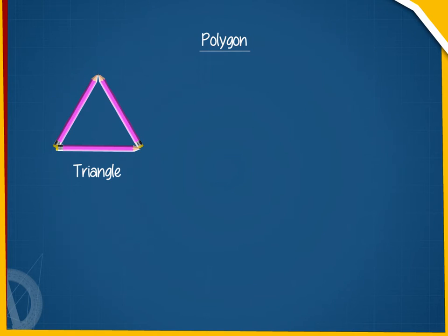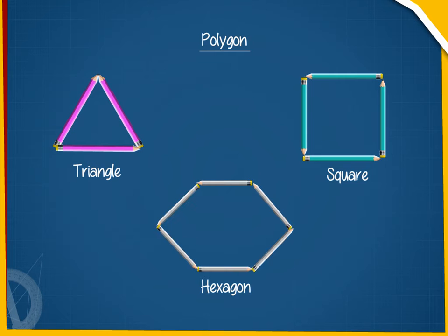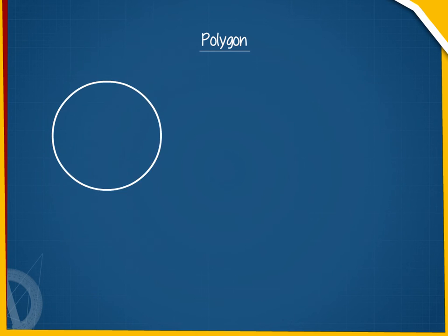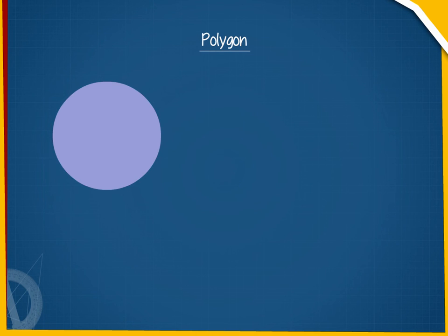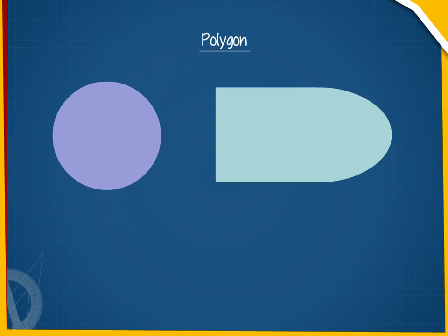We will take some pencils and arrange them in different orders to make different polygons. Shapes with curves, like a circle, are known as curvilinear figures. Observe the following curvilinear figures.